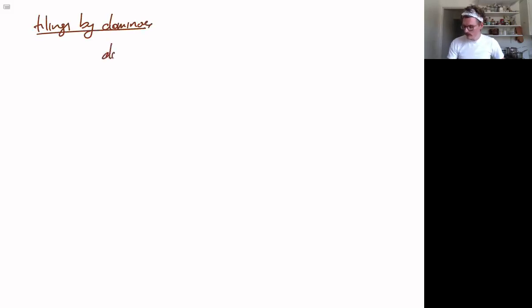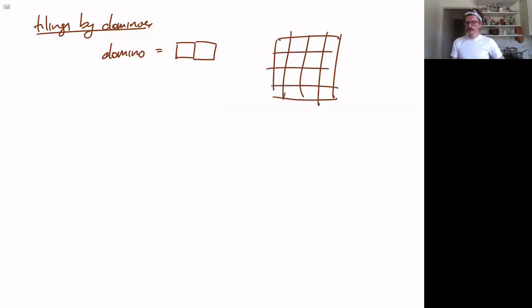So a domino is a thing that is basically two squares. And we're thinking about this in the context of if we have a sort of checkerboard, we can ask questions about how to tile this checkerboard with dominoes.